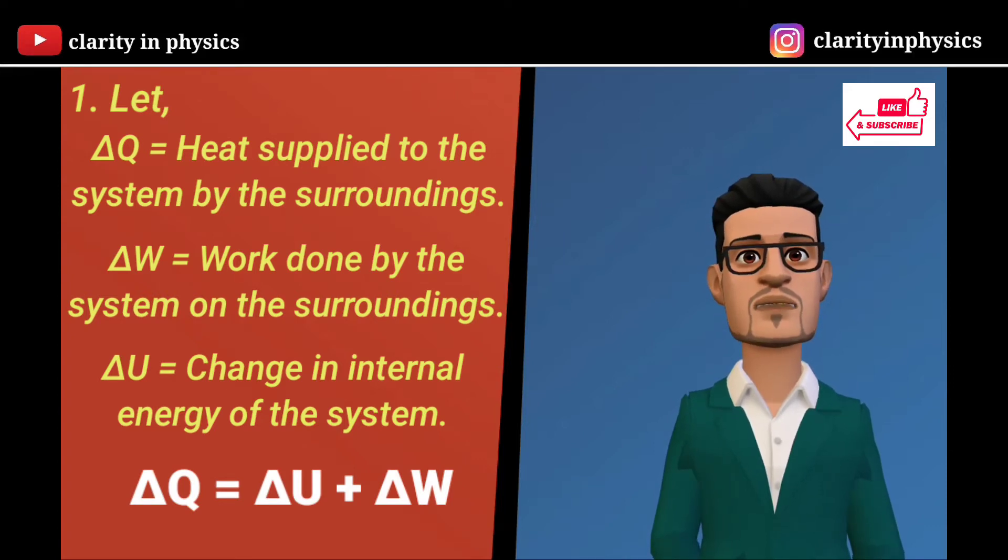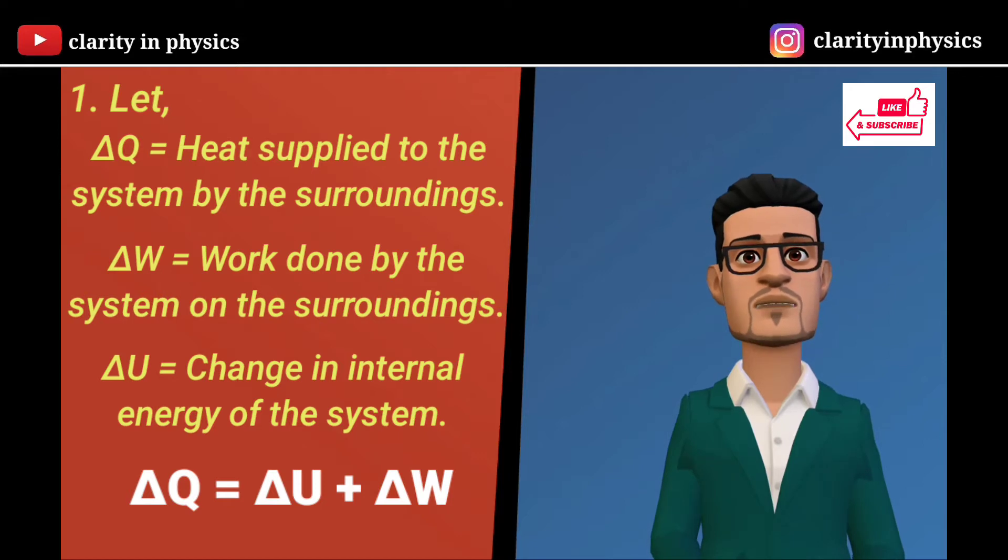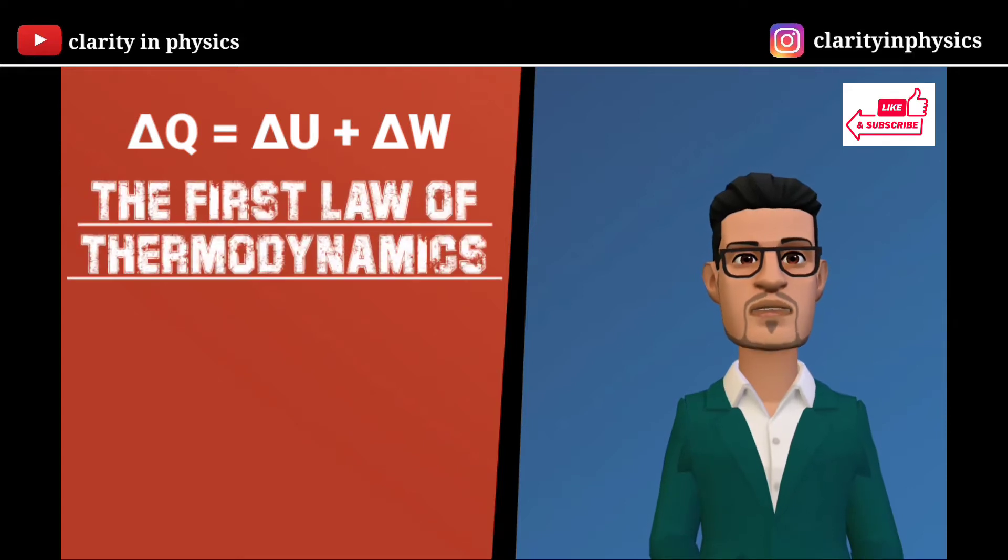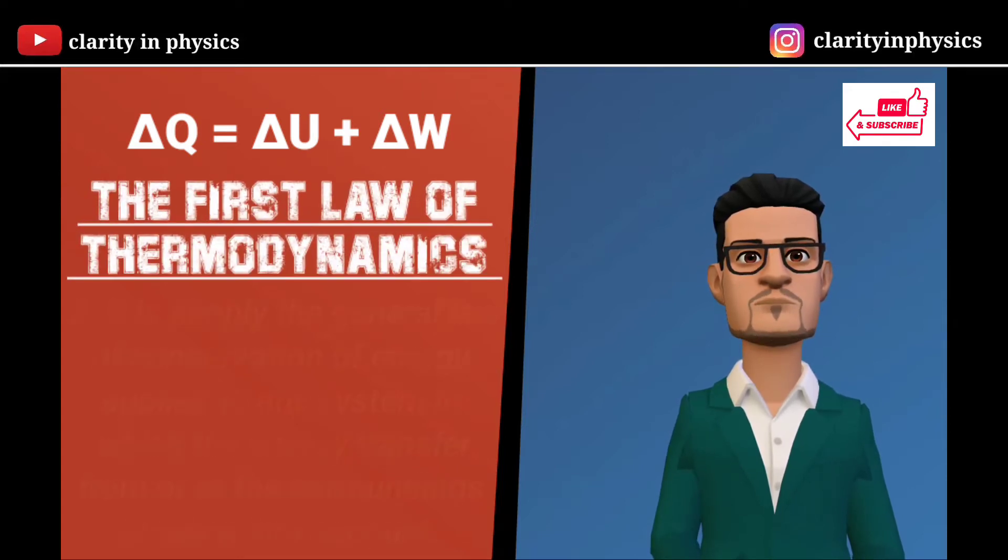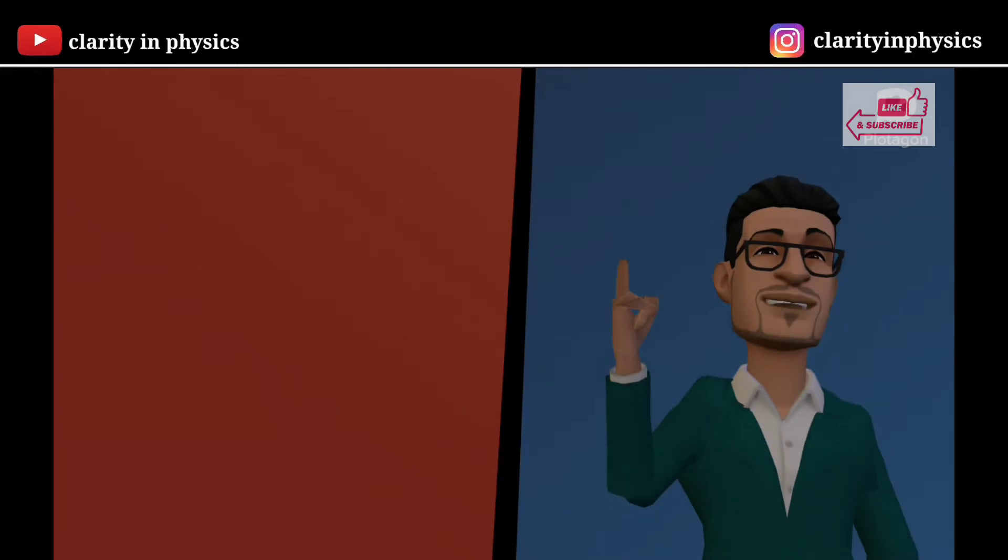That is, the energy supplied to the system goes in partially to increase the internal energy of the system and the rest in work on the environment. This equation is known as the first law of thermodynamics. It is simply the general law of conservation of energy applied to any system in which the energy transfer from or to the surroundings is taken into account.